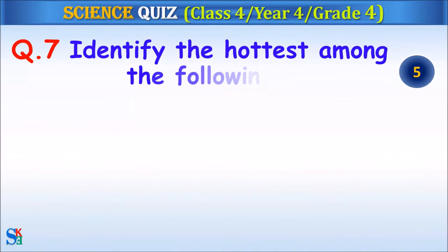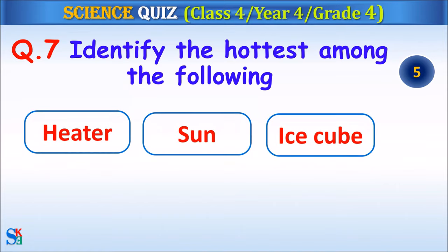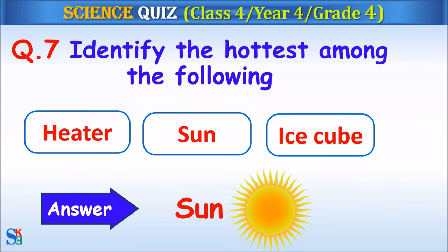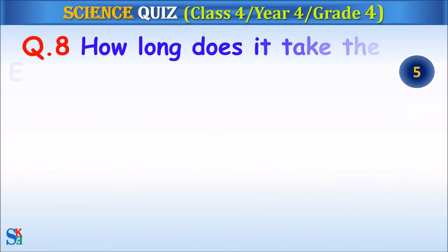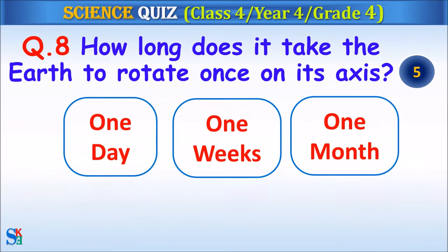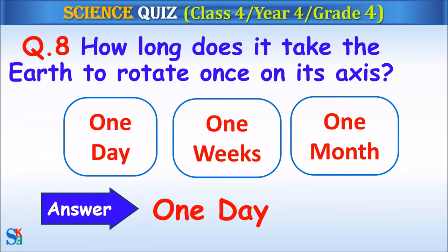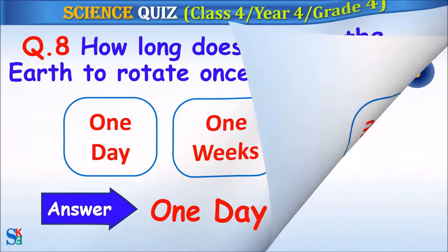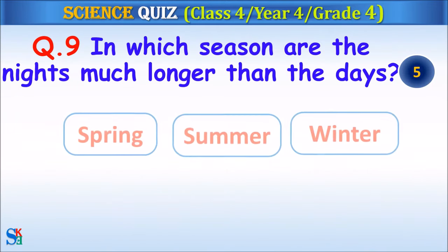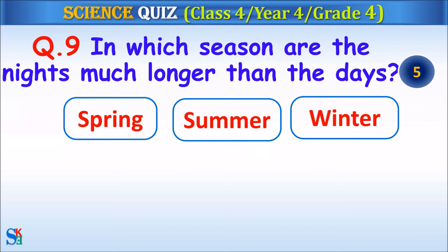Question 7: Identify the hottest among the following — heater, sun or ice cube? Your time starts. Question 8: How long does it take the earth to rotate once on its axis — one day, one week or one month? Your time starts.